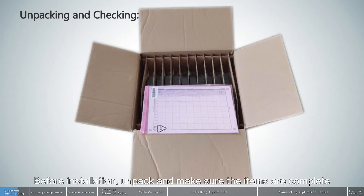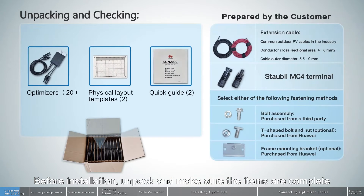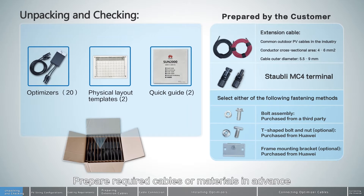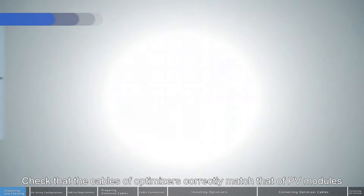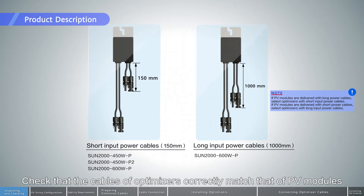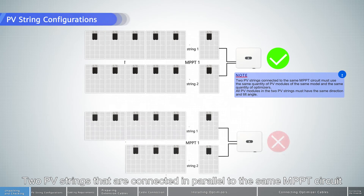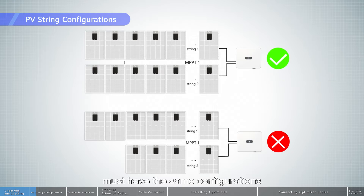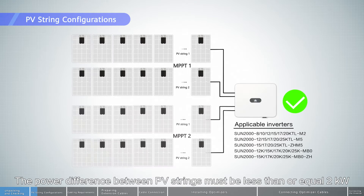Before installation, unpack and make sure the items are complete. Prepare required cables or materials in advance. Check that the cables of optimizers correctly match that of PV modules. Two PV strings that are connected in parallel to the same MPPT circuit must have the same configurations.